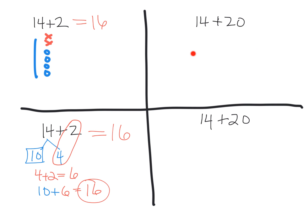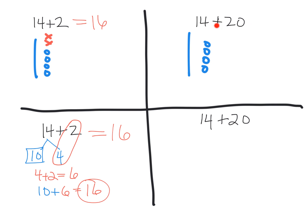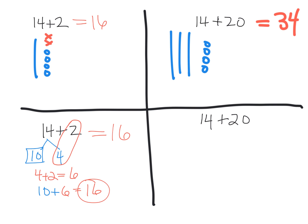Looking at it again, only this time instead of fourteen and two, it's fourteen and twenty. So that two is in a different place value. We're still going to do the same thing. Using quick tens, we model one ten and four ones for fourteen, then add twenty as two more tens. Using the commutative property and moving things around, we can now see our answer is thirty-four. That's pretty straightforward.